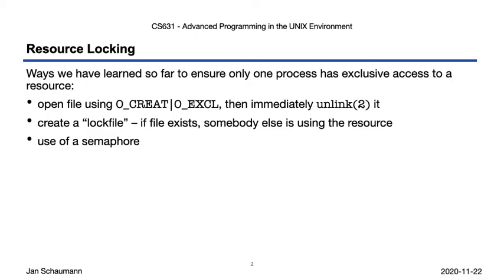Each of these approaches has some drawbacks. An unlinked file does not exist in the filesystem. While in some Unix systems you can find ways to link the file descriptor into the filesystem, there isn't a good standardized way of doing that. Using a semaphore or a lock file involves managing an additional resource beyond the file we're trying to access, and thus adds complexity. So instead, we can use a system call specifically designed to handle locks on file descriptors.